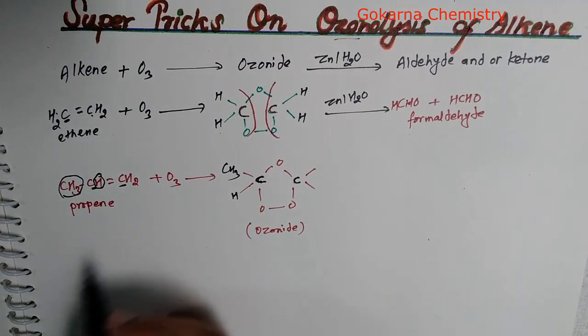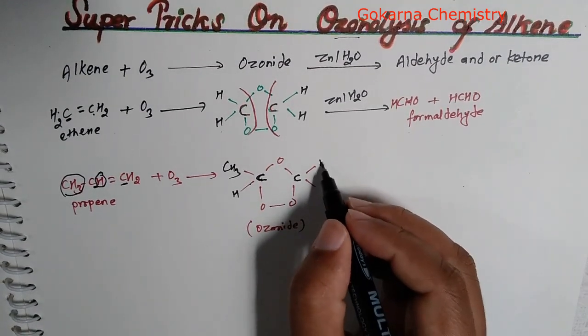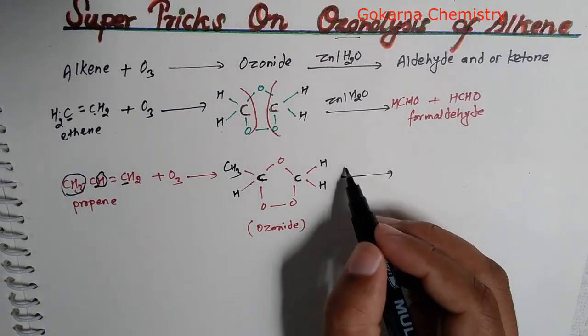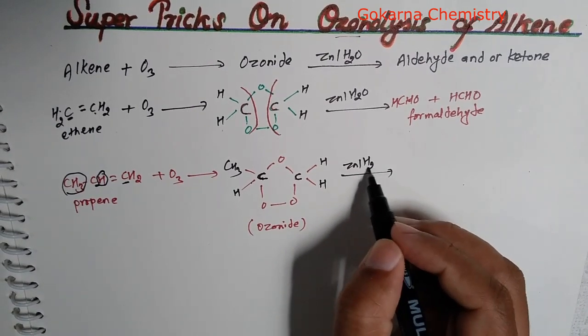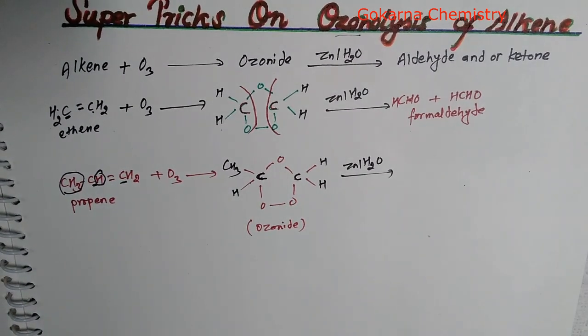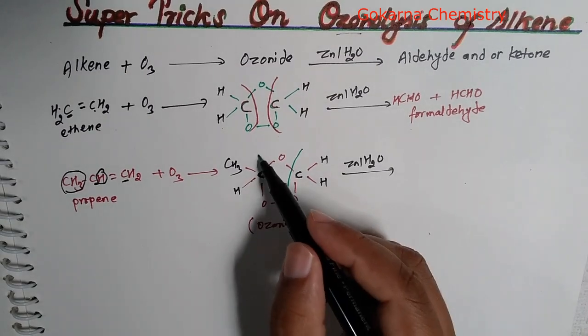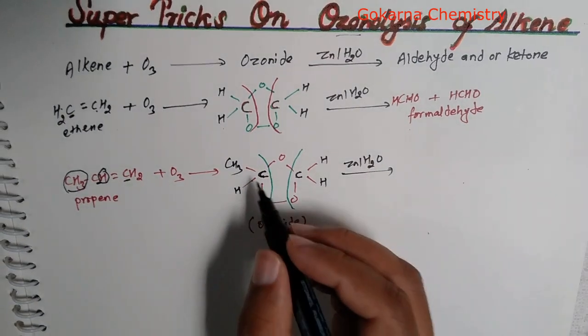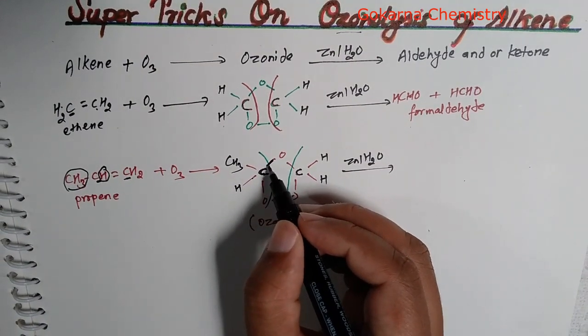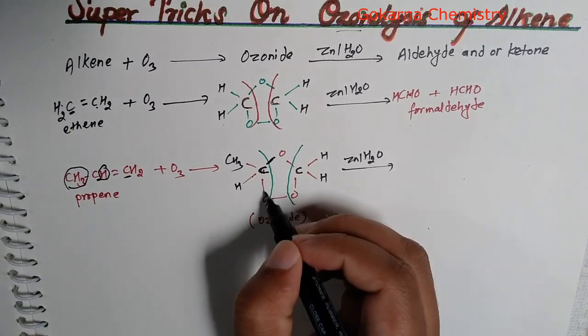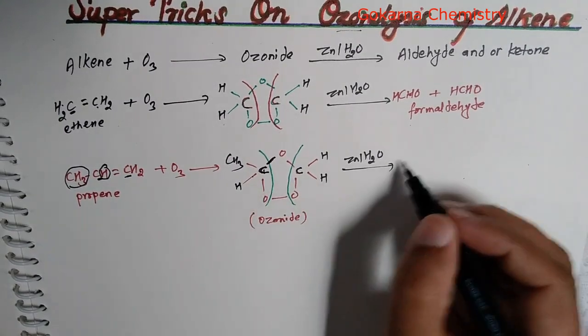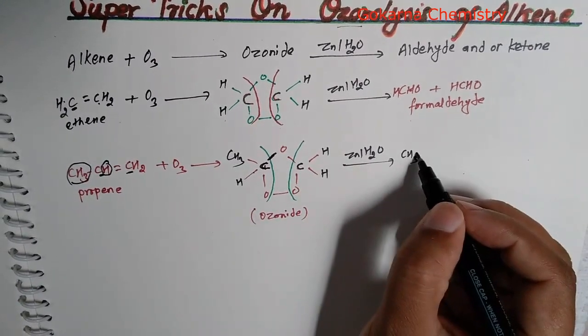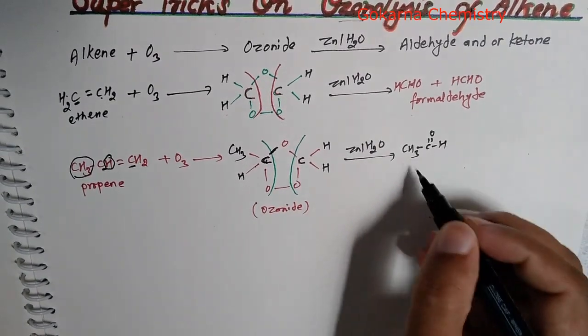This carbon has carbon and hydrogen. We will do zinc hydrolysis. This carbon-carbon bond breaks. So we get CH3-C double bond O-H, which is ethanal.